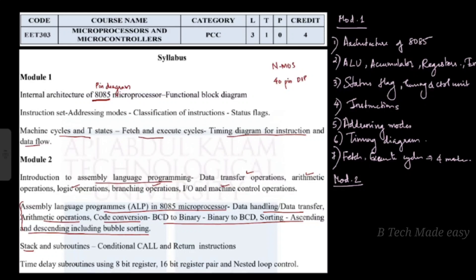If you use a subroutine in an assembly language, you can use conditional call and return instructions. A subroutine is a group of instructions that are repeated. You can use a conditional call, and once the subroutine task is done, you can use a return instruction to go back to the main program.